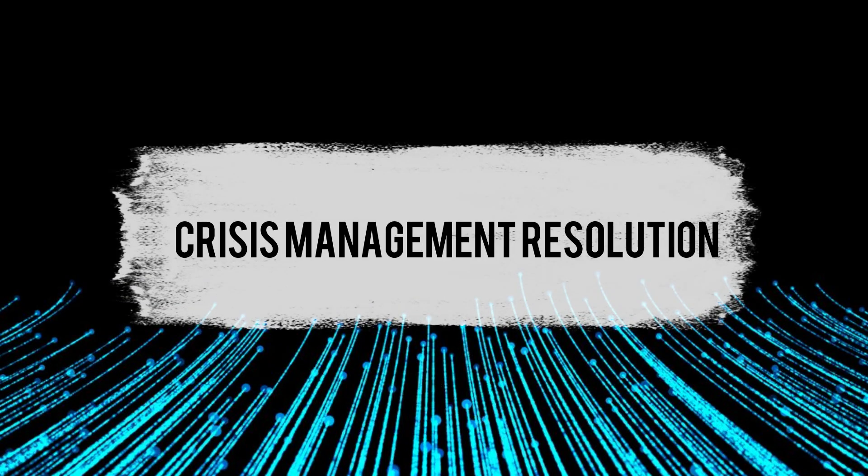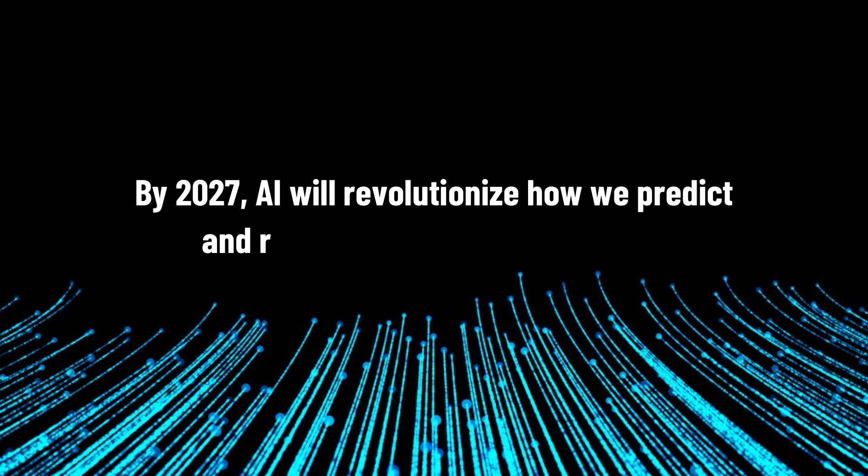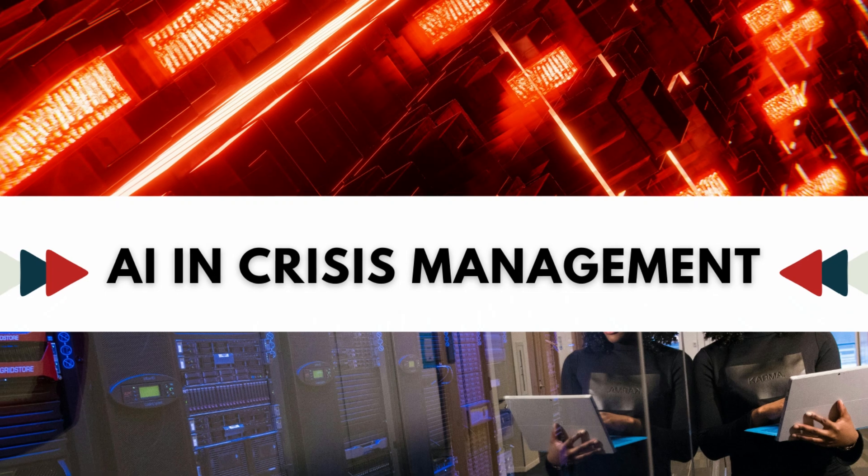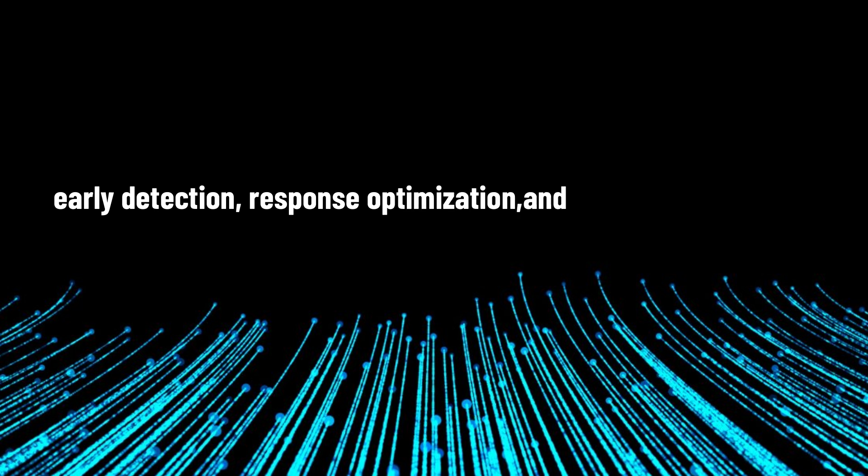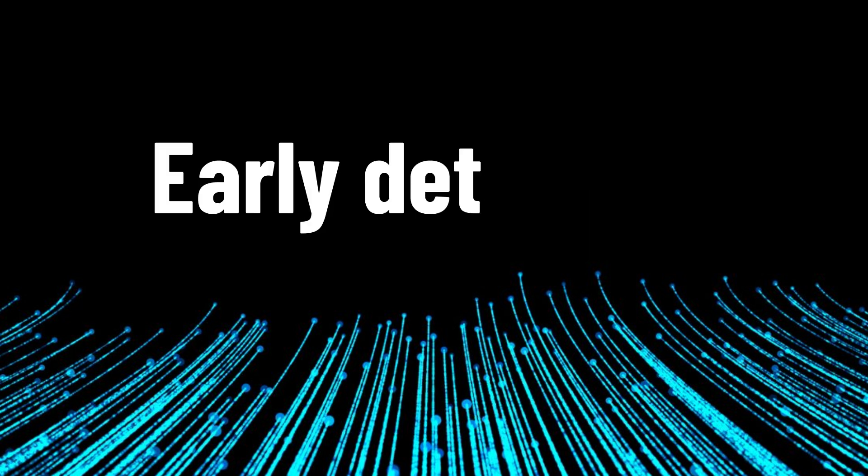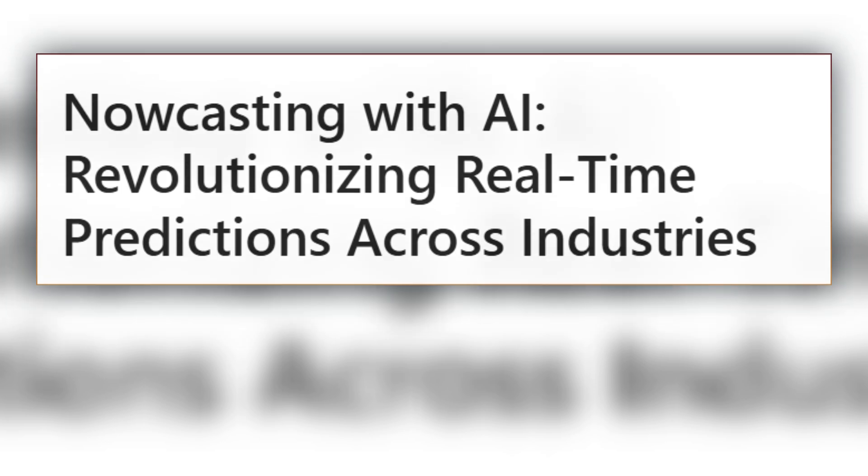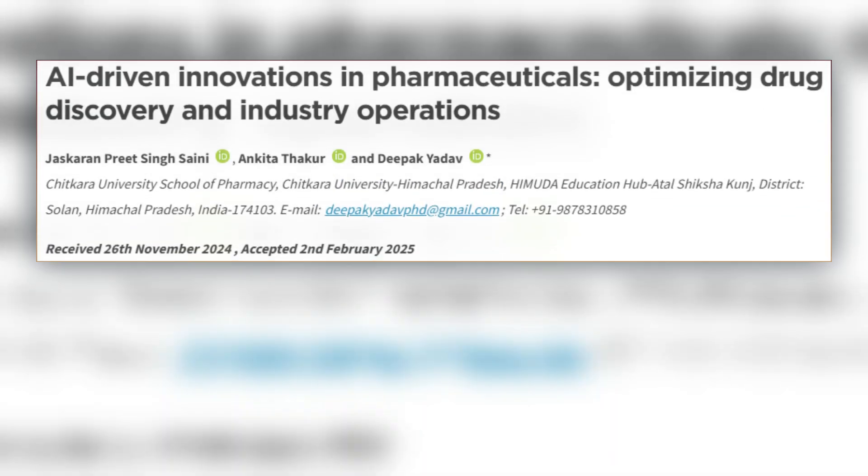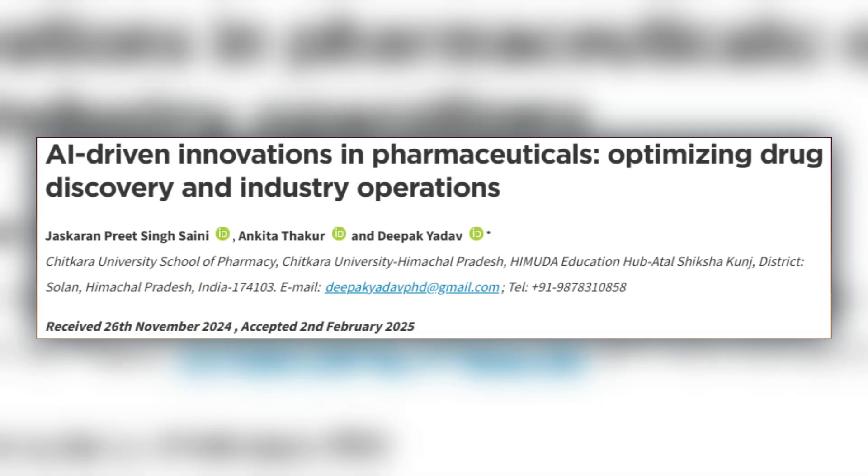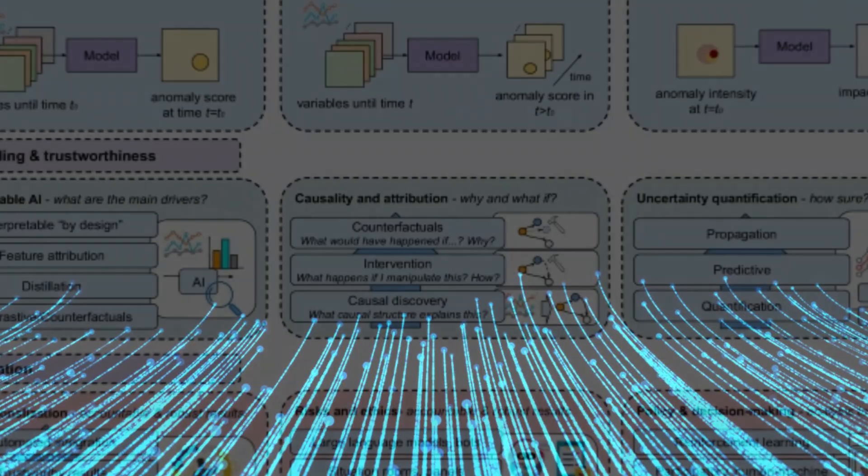Prediction number five: crisis management resolution. By 2027, AI will revolutionize how we predict and respond to global emergencies. These systems are already transforming crisis management in three critical ways: early detection, response optimization, and resource allocation. First, early detection. AI systems now combine satellite imagery, weather data, social media activity, and economic indicators to predict crises weeks in advance. In pharmaceutical research, AI has already cut drug discovery timelines by over 50%, crucial for responding to future pandemics. For climate-related disasters, AI can now predict extreme weather events with 89% accuracy up to 12 days in advance.